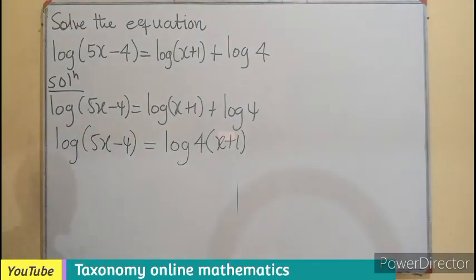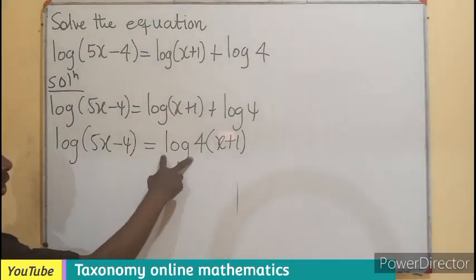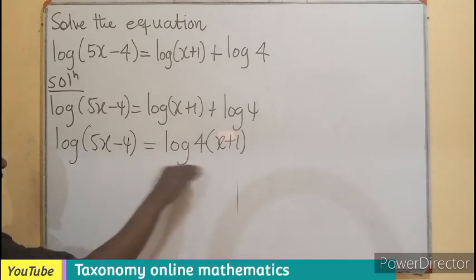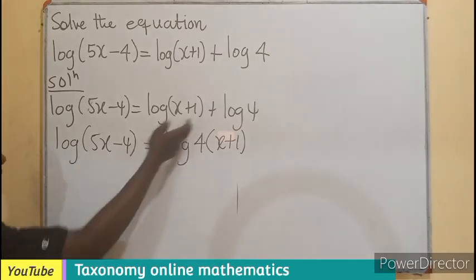Now, if that is done, we can see that the log is base 10 on both sides. If I divide through by the logarithm with base 10, it will cancel.